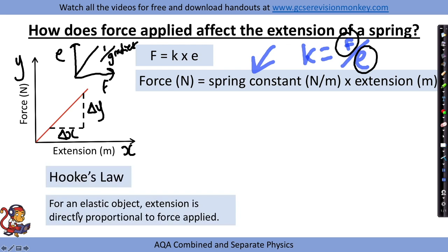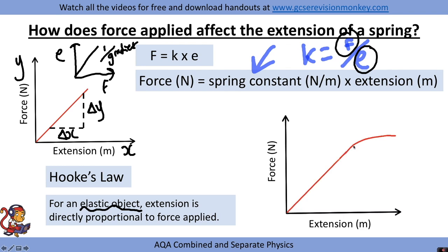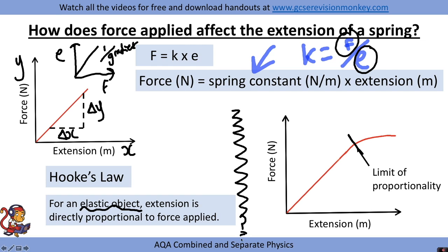Hooke's law states that for an elastic object, extension is directly proportional to force. An elastic object returns to its original shape after being stretched. However, if you keep applying more force, you eventually reach the limit of proportionality — the point where the spring no longer obeys Hooke's law and the graph curves off. At this point the spring is inelastic: it won't return to its original shape when the masses are removed.